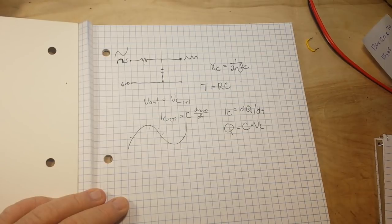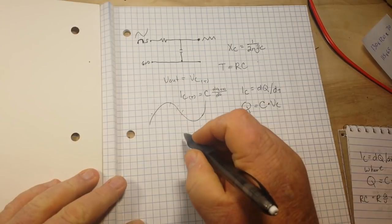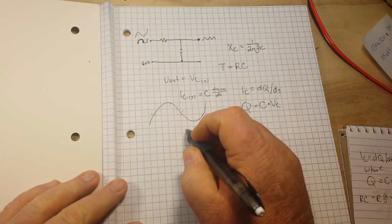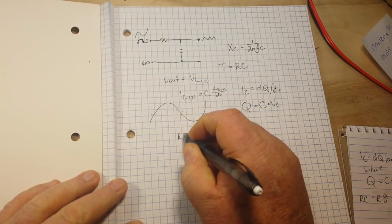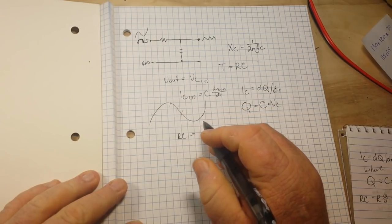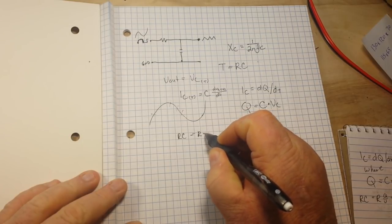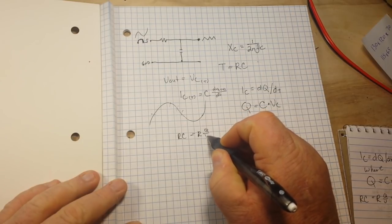I hope you guys are following along here. Let's bring in our RC time constant. Okay? Our RC time constant is R times q, or charge, over the voltage.